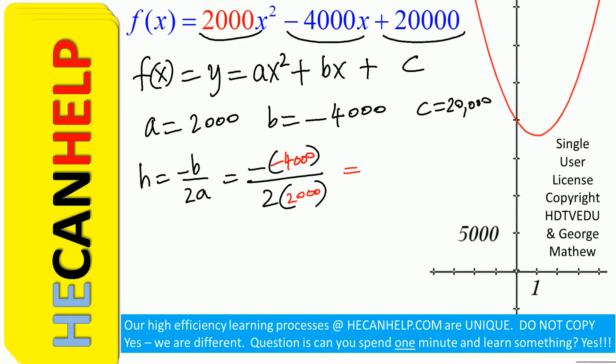This is negative of negative 4000, which is positive 4000. And 2 times 2000 is 4000. What is 4000 divided by 4000? 1.